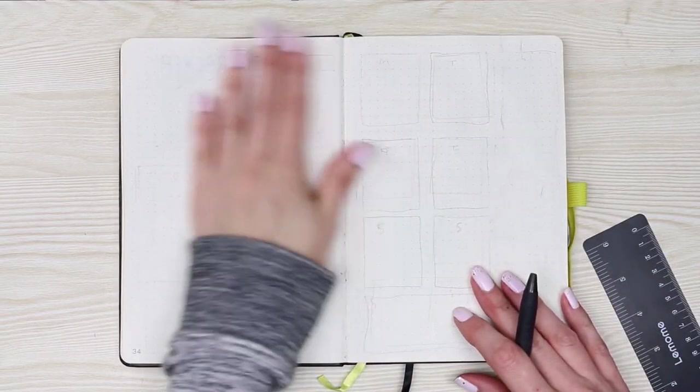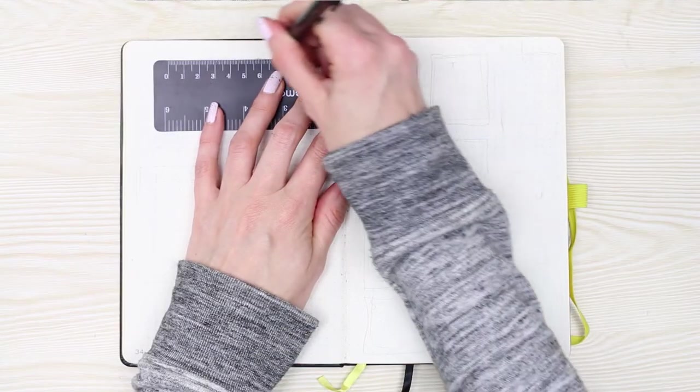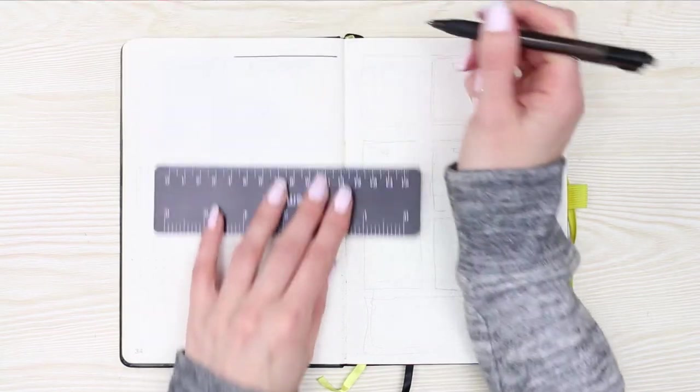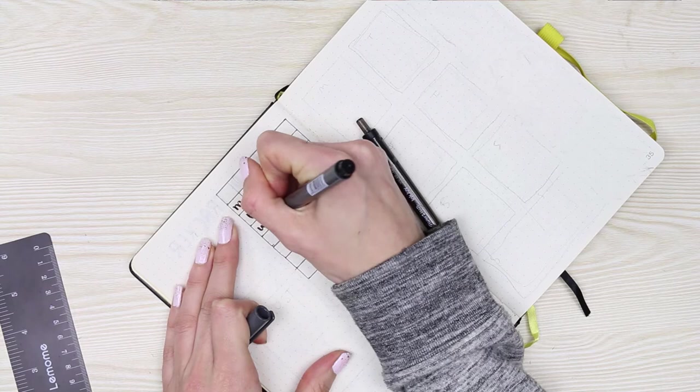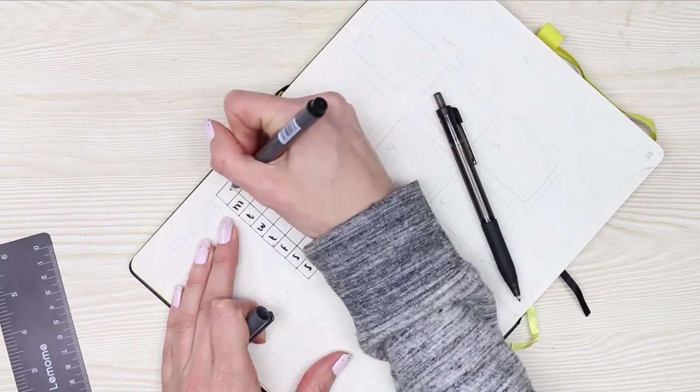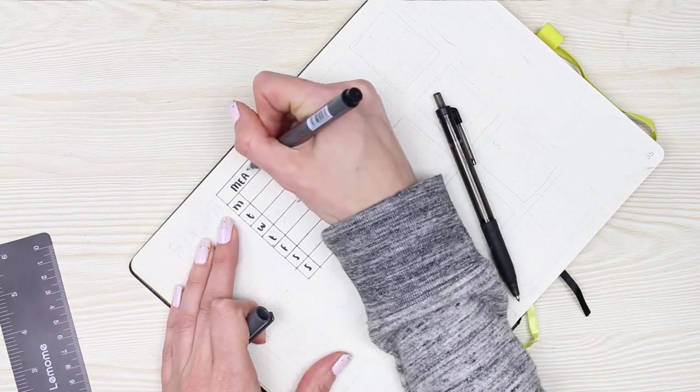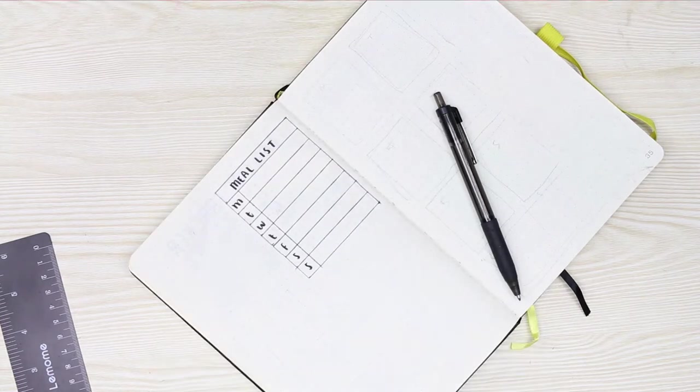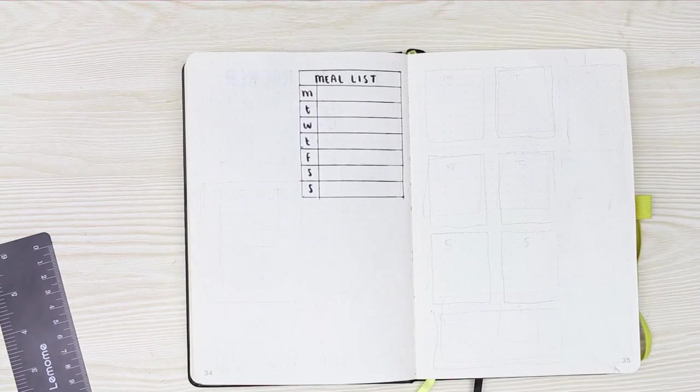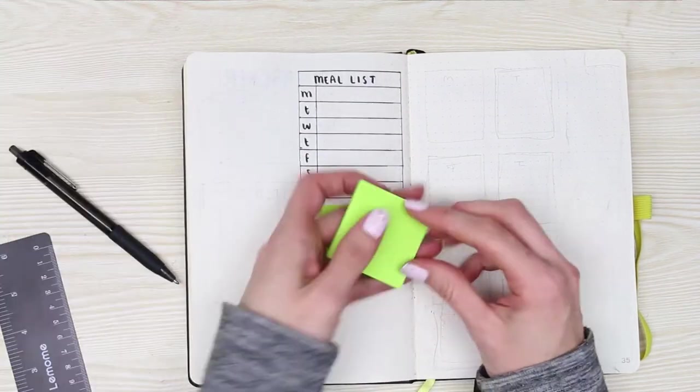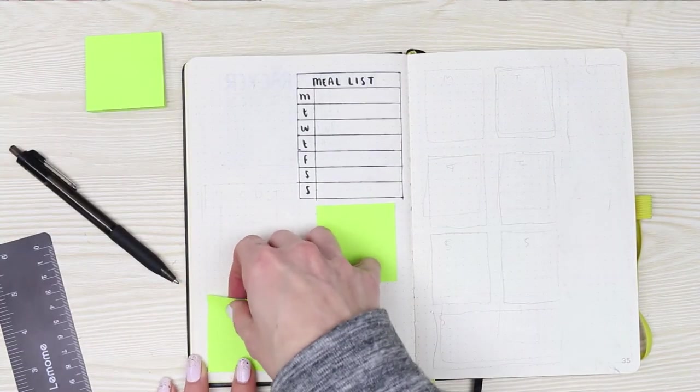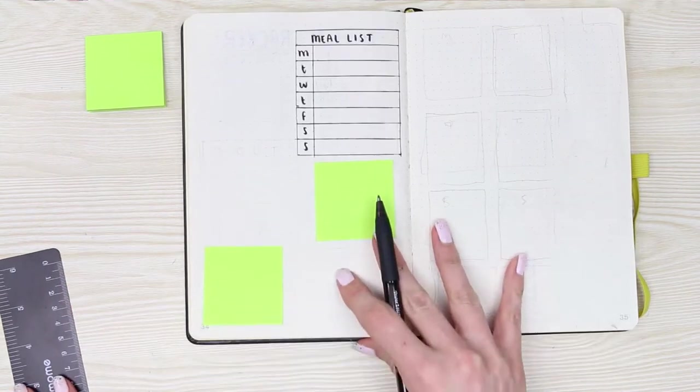Now we're going to be moving on to my weekly setups. Normally I have this on a double page, but I decided to switch it up for Froguary. I'm starting at the top with a really simple table, and here I'm going to be writing down my meal list for the entire week. I'm also going to be using some of these green tiny Post-it notes.